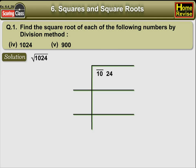Therefore, 10 comes under one bar and 24 comes under another bar. Now, let us find the largest number whose square is less than or equal to the number under the extreme left bar. In this case, we have 10. 3 squared, which means 9, is less than 10 and 4 squared, which means 16, is greater than 10. Therefore, we will take 3.